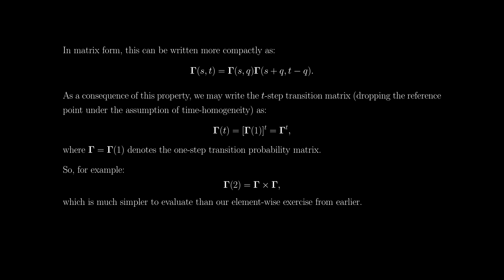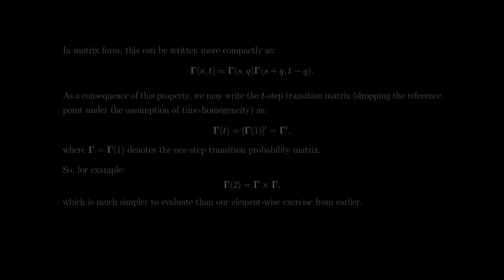For example, the two-step transition probability matrix is just the product of two one-step transition probability matrices. Likewise, we can evaluate the three-step transition probability matrix by post-multiplying the two-step matrix we just calculated with the one-step matrix — or vice versa, we can swap them around because the time horizons don't matter. We can continue until we have the T-step transition probability matrix. That's the main application of the Chapman-Kolmogorov equations.